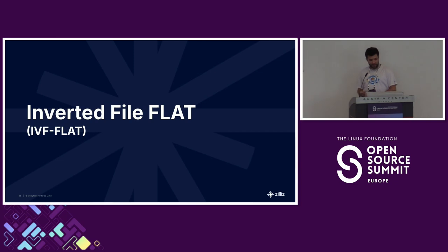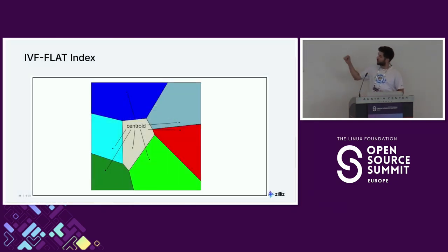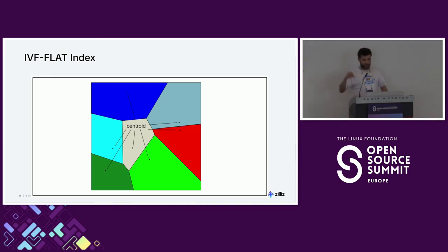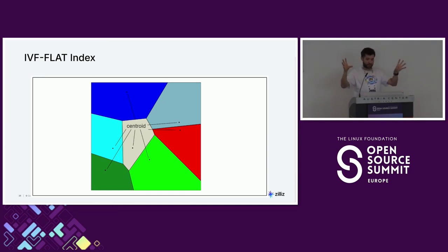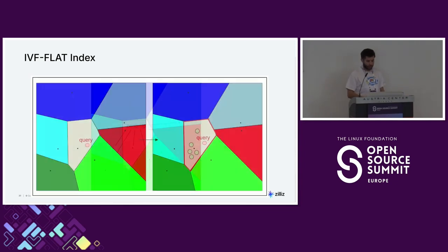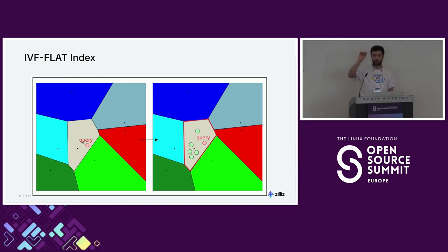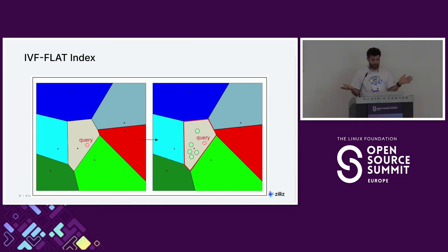Then you have IVF Flat — Inverted File Flat. Similar, except instead of searching all points, you search through centroids. Every partition is created with a centroid, and when you run your query, instead of searching nearest neighbor for all points, you go through the nearest centroid and search only within that partition. So instead of searching 20 million vectors, you might search 10,000. It really reduces the search space.